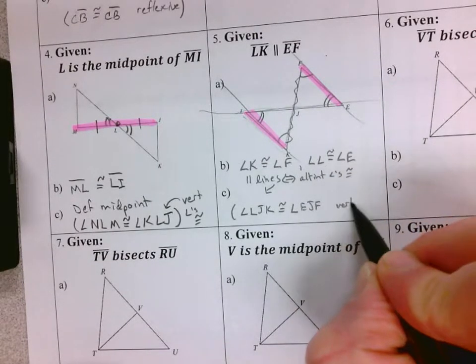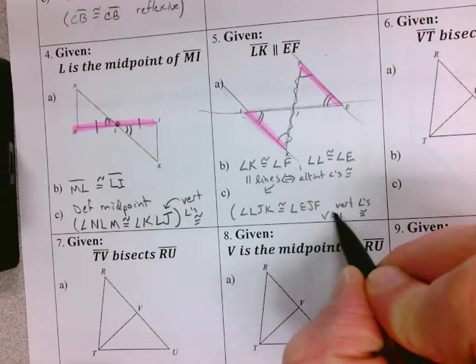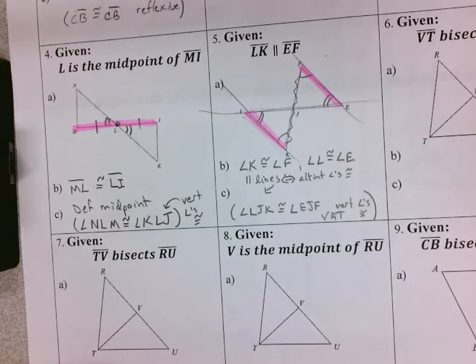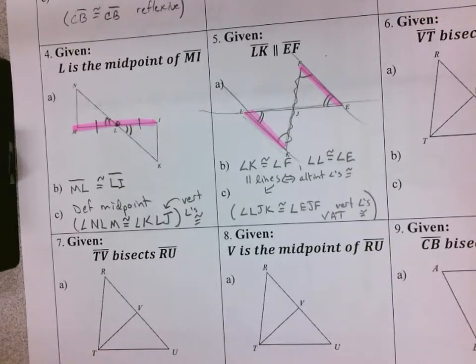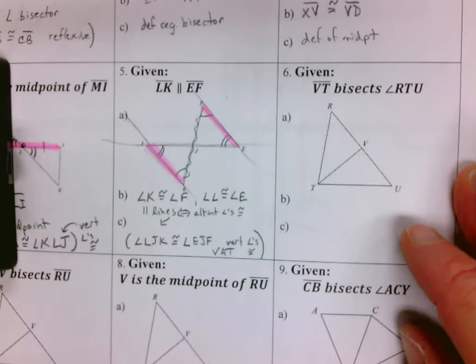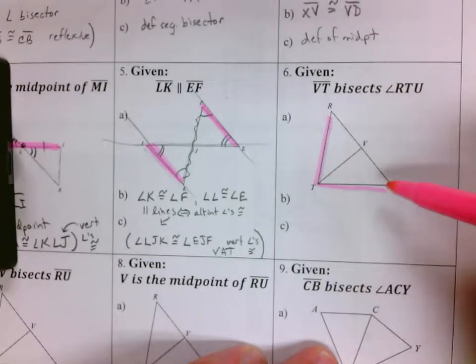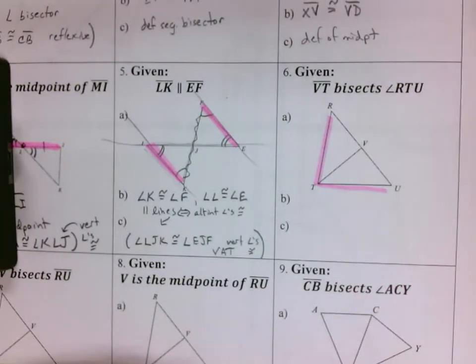So lots of angles congruent. We just need one side to finish that off. Segment VT bisects angle RTU. Again, RTU, and our bisector segment right here, so these two angles are congruent.